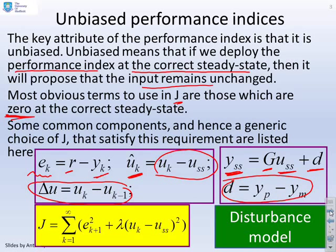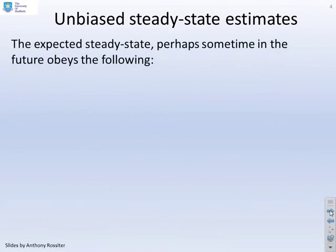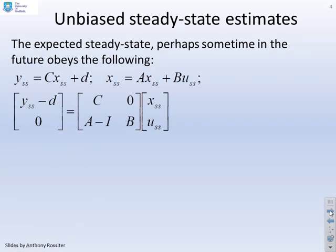The performance index we're going to use will use the errors squared and the deviation variables in the input squared. We're not going to use the rate in the input here, though of course you could. The expected steady state obeys the following two equations: the output is given by CX plus some disturbance, and the steady state state is given by A times the steady state state plus B times the steady state input. This is an output disturbance model.